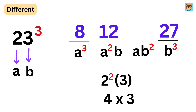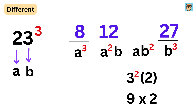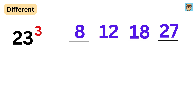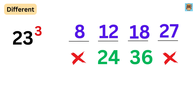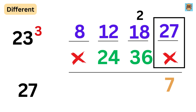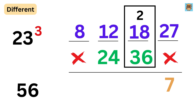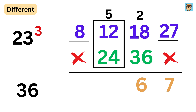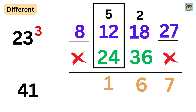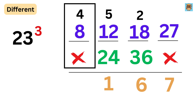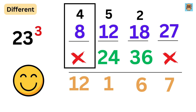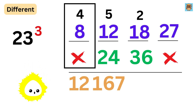Then 3² × 2 = 9 × 2 = 18. Now put cross marks and double the middle values. Add: 7 and carry 2; 18 plus 36 is 54 plus carry 2 is 56 so write 6 and carry 5; 12 plus 24 is 36 plus 5 is 41 so write 1 and carry 4; finally 8 plus 4 is 12. 23 cubed is 12167. Can you tell me in 5 seconds what 32 cubed is?